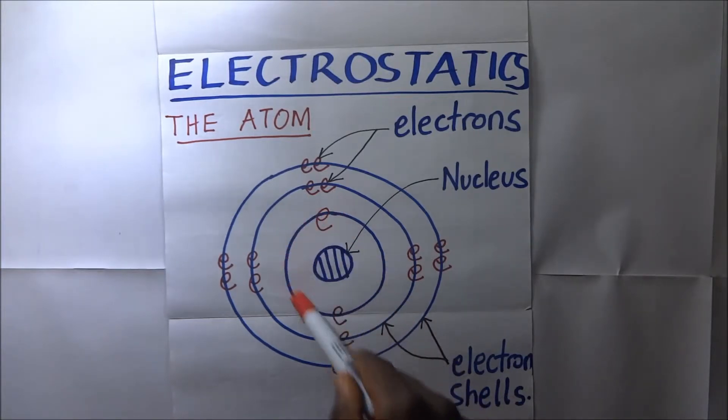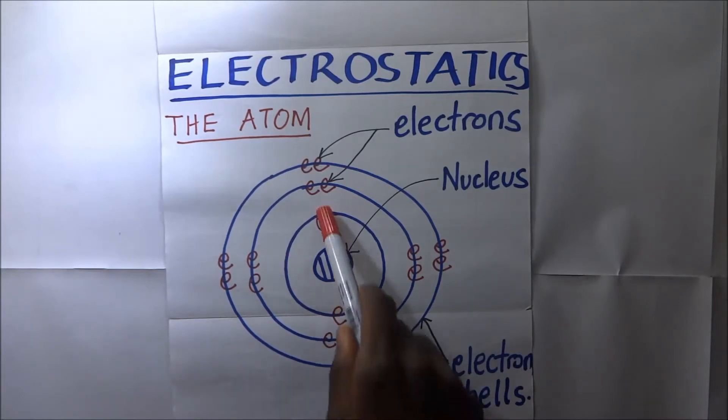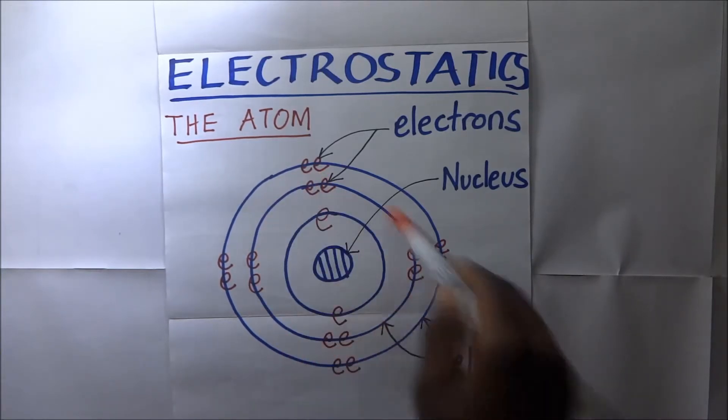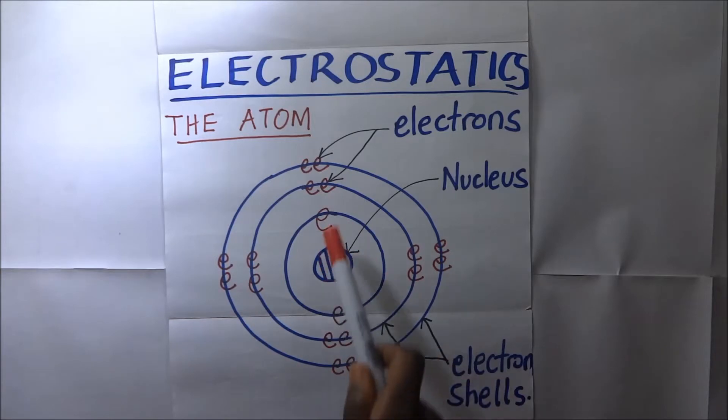In the first shell, the shell that is immediately after the nucleus, it has got a maximum of just two electrons. And in the next shells, the shells that come after the first one have got a maximum of eight.